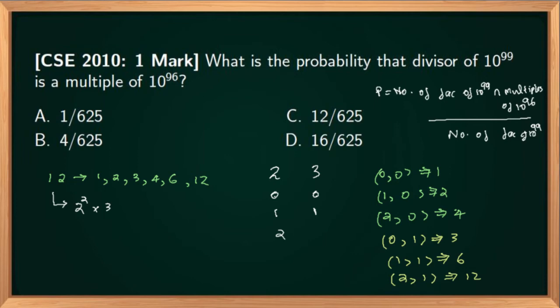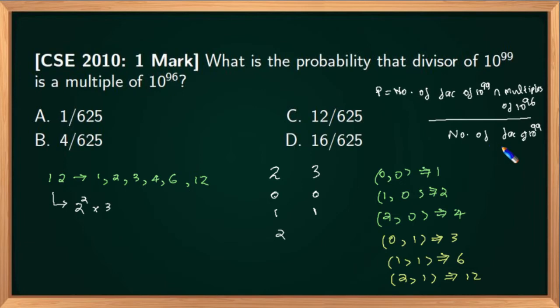What is the probability that a divisor of 10 raised to 99 is a multiple of 10 raised to 96? To find that probability, you have to find the ratio between total number of favorable outcomes divided by total number of outcomes. In the denominator, you must have the total number of divisors of 10 raised to 99, or total number of factors of 10 raised to 99 — both are the same.